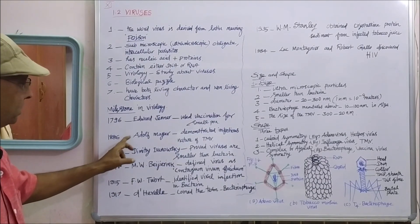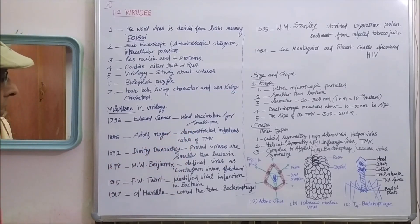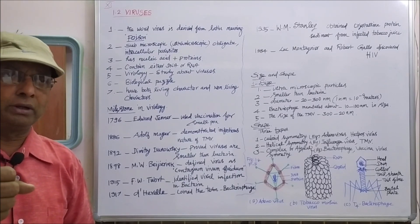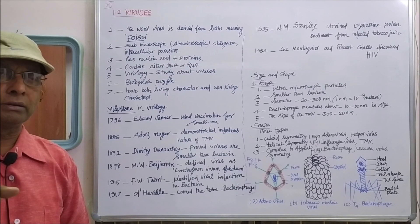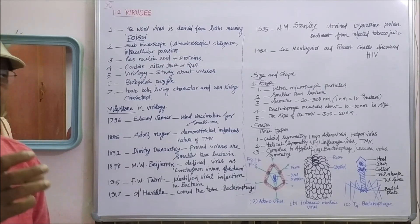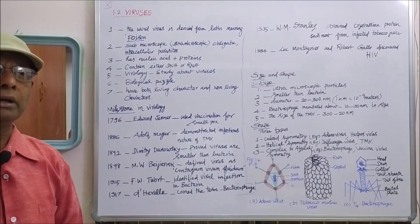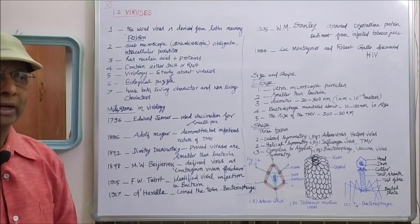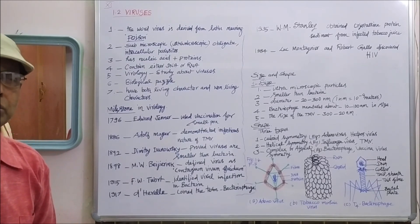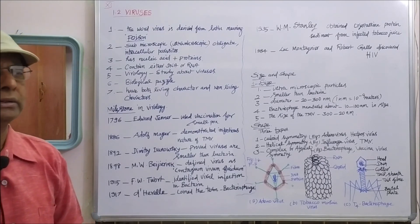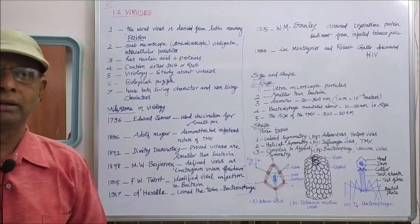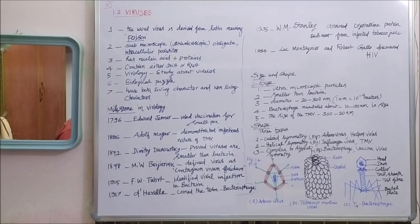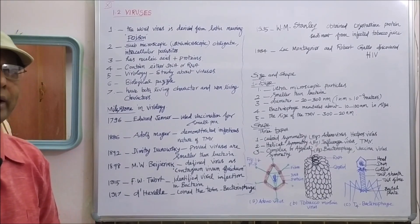In the year 1886, Adolf Mayer demonstrated the infectious nature of the tobacco mosaic virus. He collected an infected leaf of the tobacco mosaic plant, extracted juice from it, and when he applied the infected juice to a healthy tobacco mosaic plant, disease appeared immediately. From this he concluded that the tobacco mosaic virus is an infectious one.